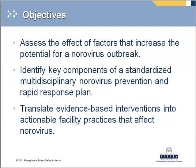Moving on to our objectives: first, we'll take a fresh look at the factors that increase the potential for an outbreak. As infection preventionists, we know that a bundled approach has led to sustained decreases in some HAIs, such as the central line bundle. The second objective is to identify key components of a well-constructed package of interventions for norovirus prevention and a rapid response plan. There has been new evidence recently published, and our third objective is to prepare you to translate that evidence into actionable facility practices.